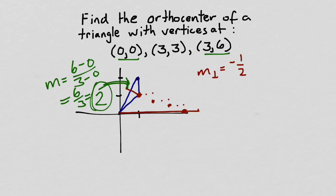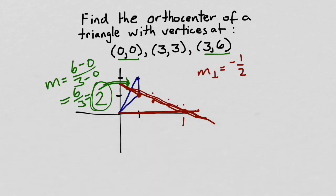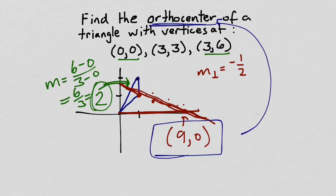And so the other altitude looks like that. And it crosses the first altitude at this point, which has coordinates 9, 0. And that's our answer. We were looking for the orthocenter. The coordinates of the orthocenter are 9, 0 for this triangle.